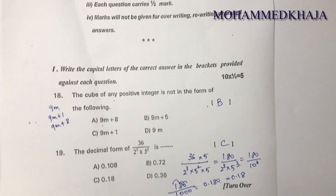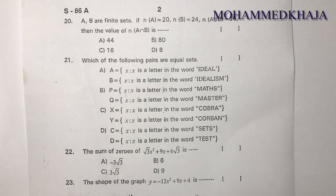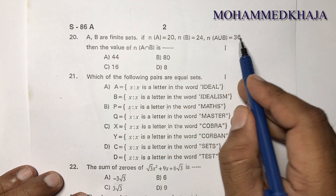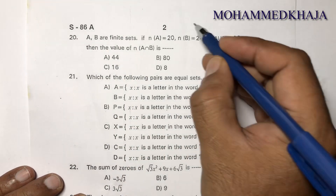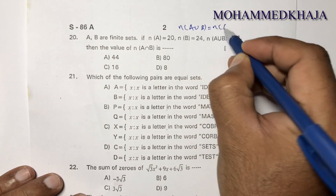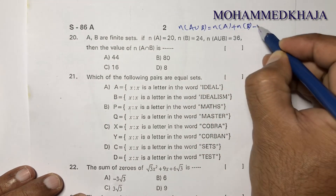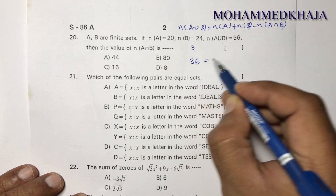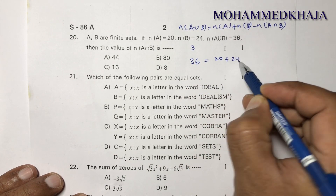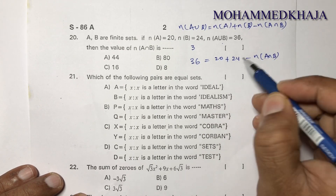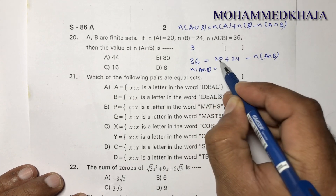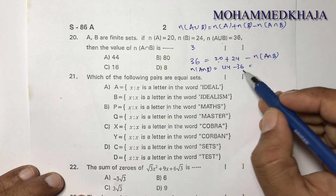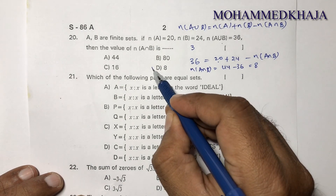Next question: A and B are finite sets with N(A)=20, N(B)=24, and N(A∪B)=36. Find N(A∩B). Using the formula N(A∪B) = N(A) + N(B) − N(A∩B), we get N(A∩B) = 20+24−36 = 44−36 = 8. The correct option is D.